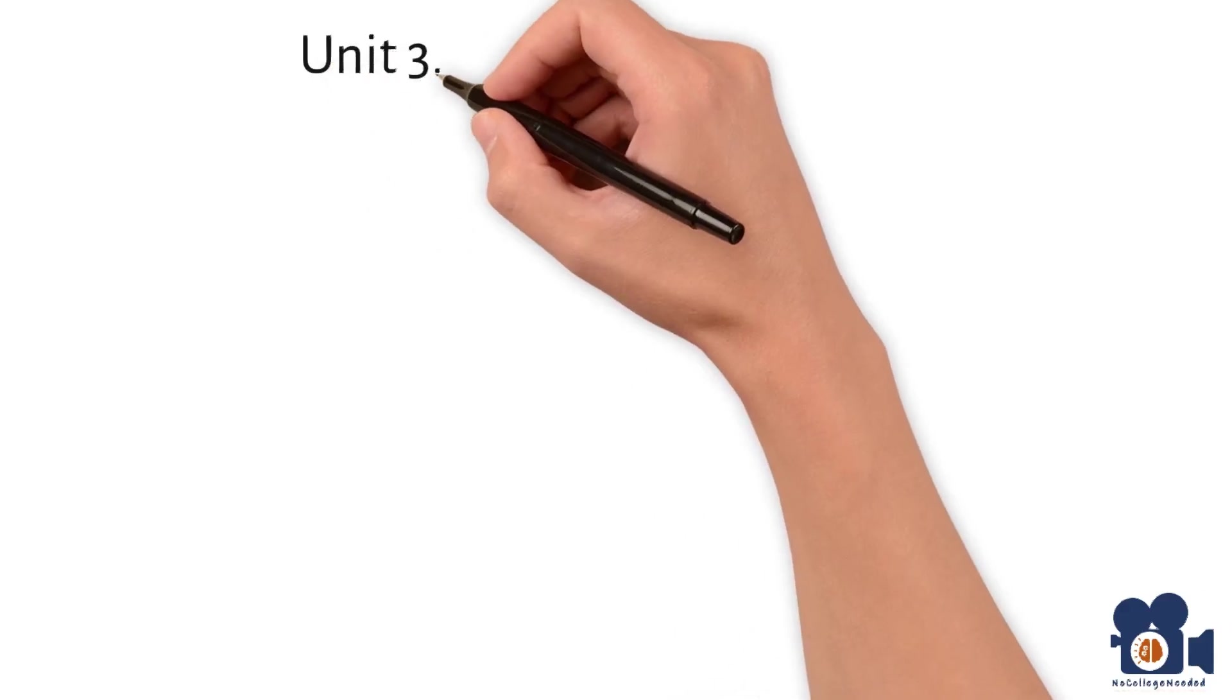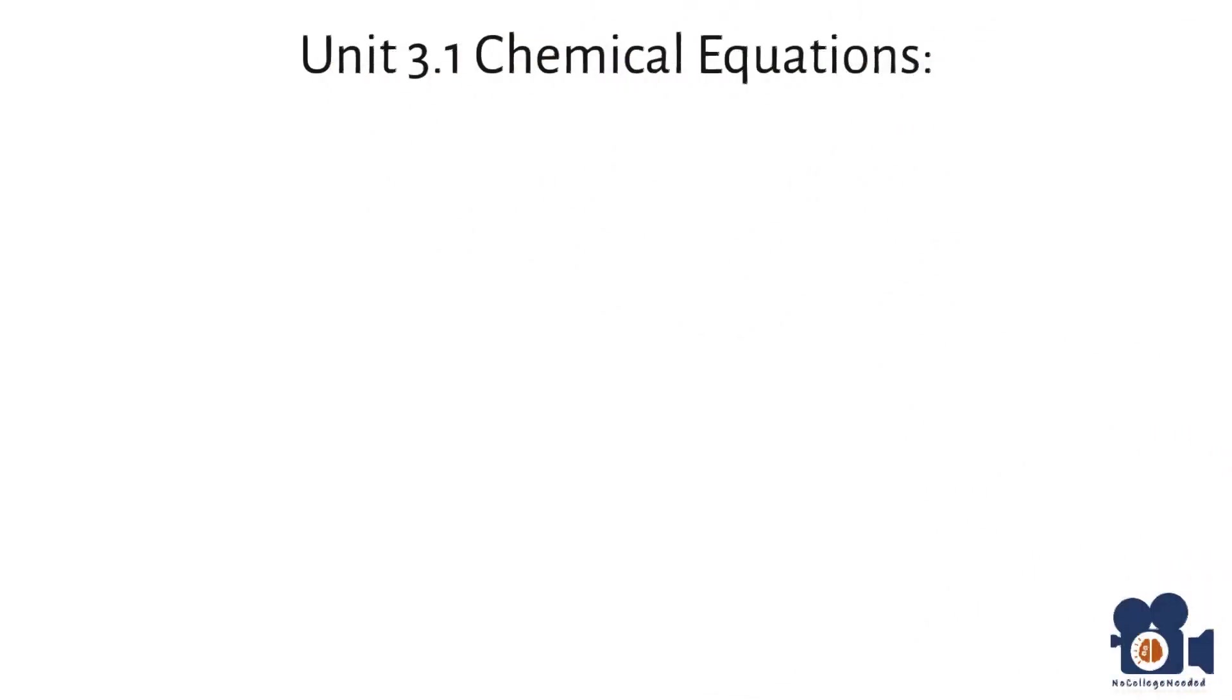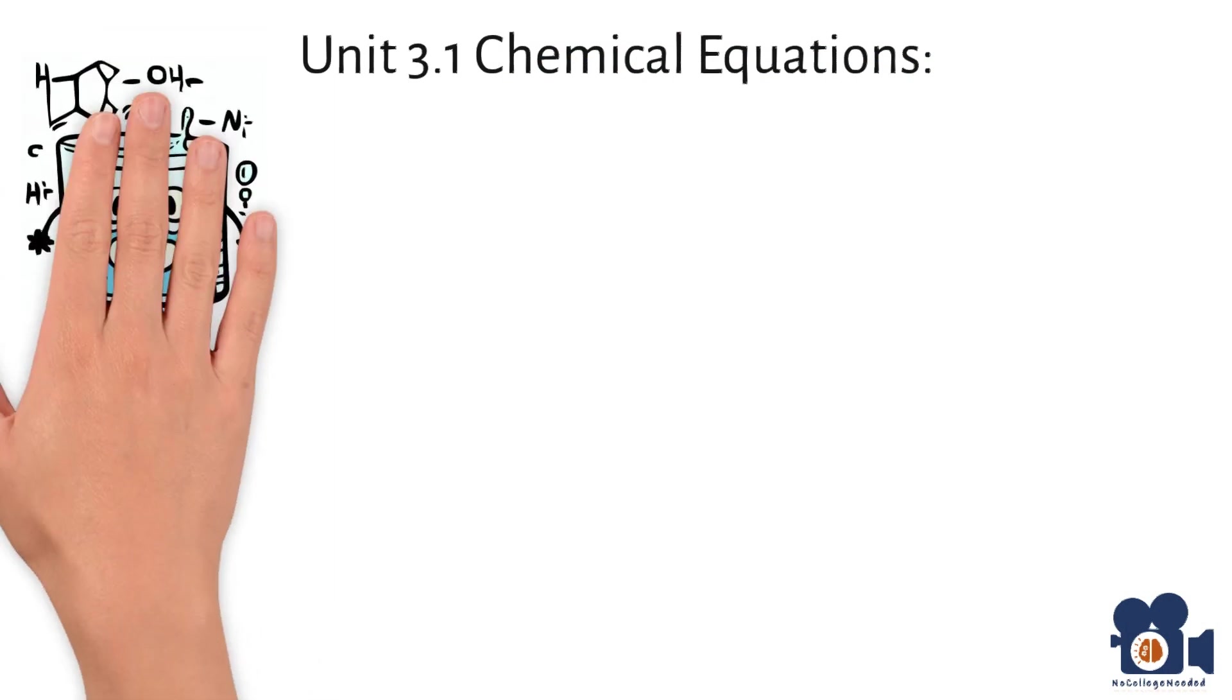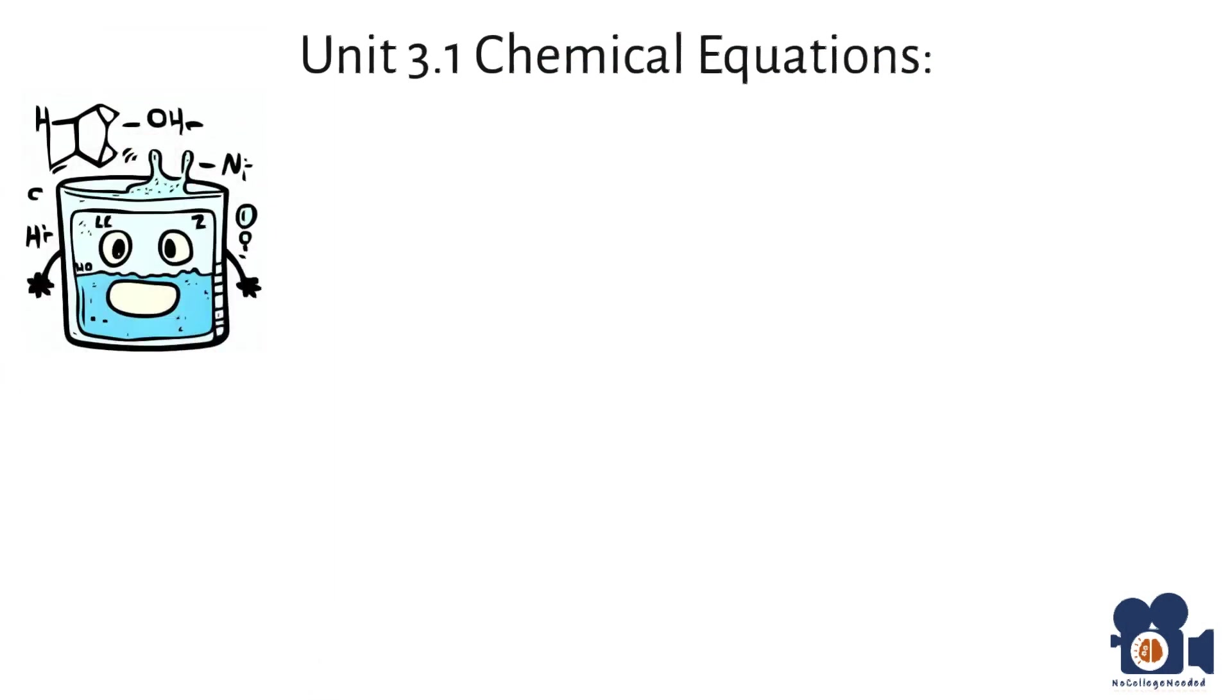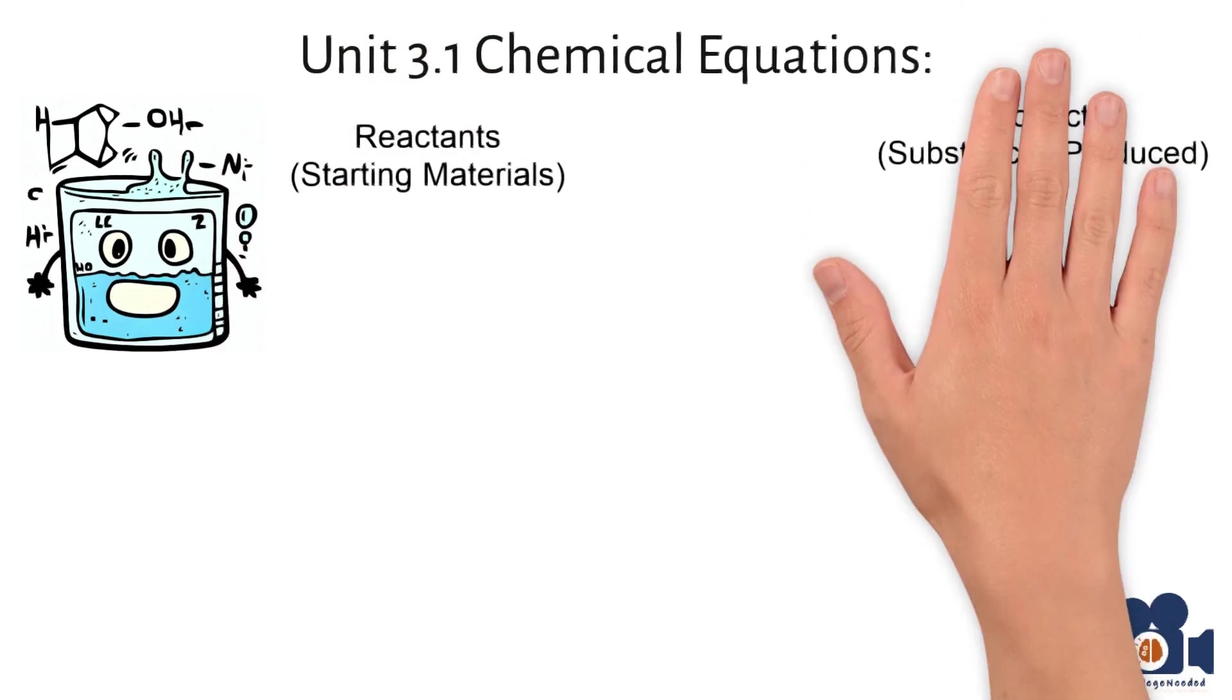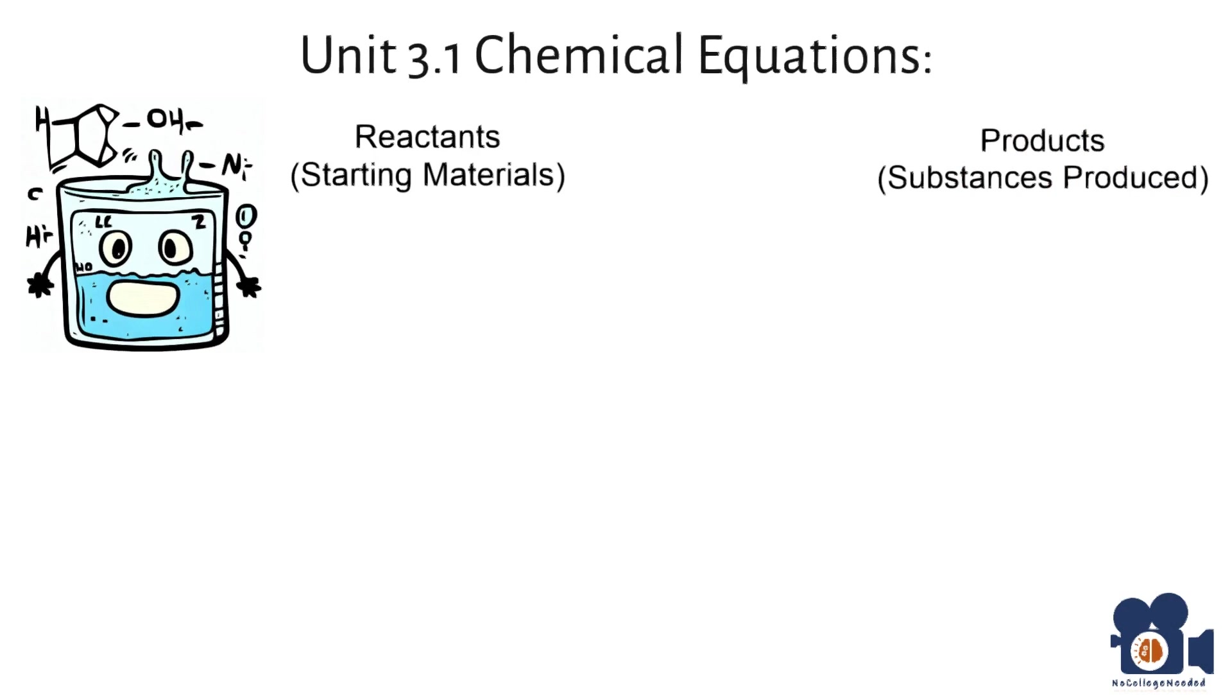In Unit 3.1, we introduced the concept of chemical equations that allow chemists to describe and communicate the details of a chemical reaction in a clear and standardized way. They show the reactants, the starting materials, on the left-hand side and the products, the substances produced by the reaction on the right-hand side, with an arrow indicating the direction of the reaction.